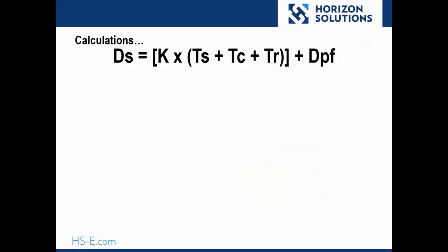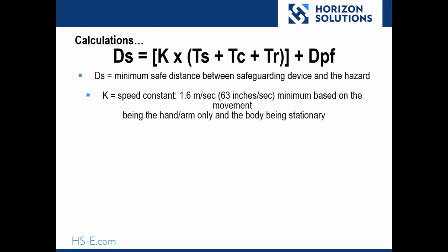Here we have the equation for creating the safe minimum mounting distance according to the ANSI standards. DS is the minimum safe distance between the safeguarding device and the hazard itself. K is the speed constant given at 63 inches per second according to the standards, and this is for the average hand or arm speed.